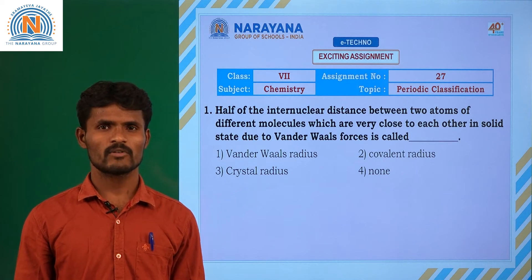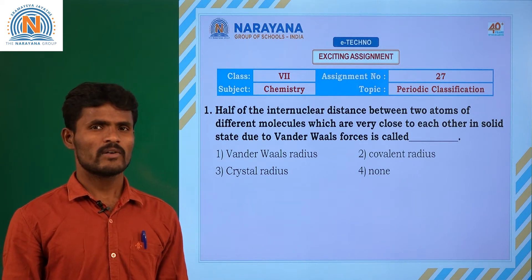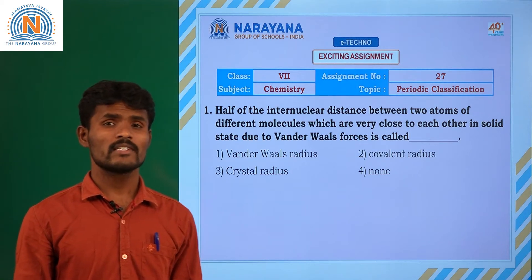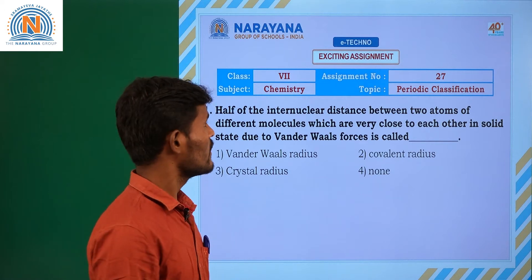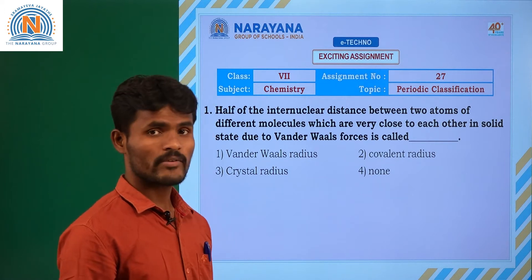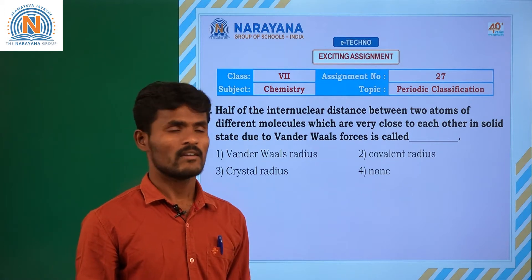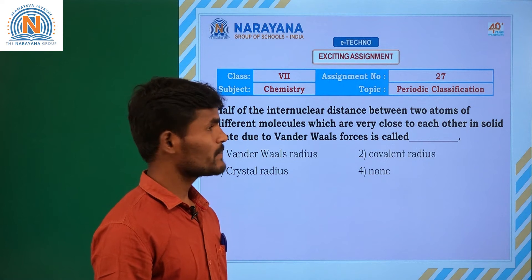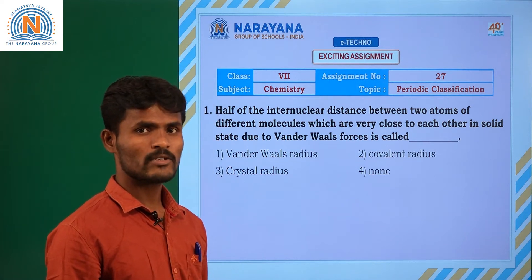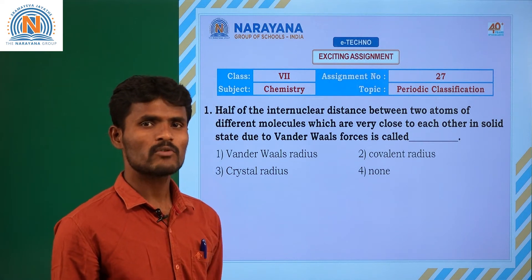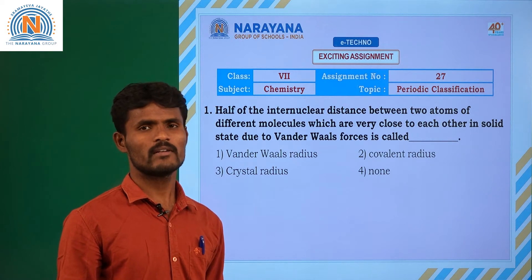Hello children, welcome to the Narayana live classes. Today we are going to discuss the part of assignment number 27, 7th class chemistry. Our topic is periodic classification. In this assignment we have 5 questions total, and now let us discuss one by one.